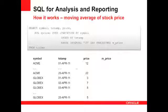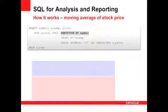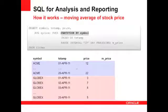But how is the data for that last column calculated — the m_price? With our data set we have data for multiple stock symbols, so when we're calculating the moving average price we want the price that relates to a specific symbol. Therefore we partition by symbol.